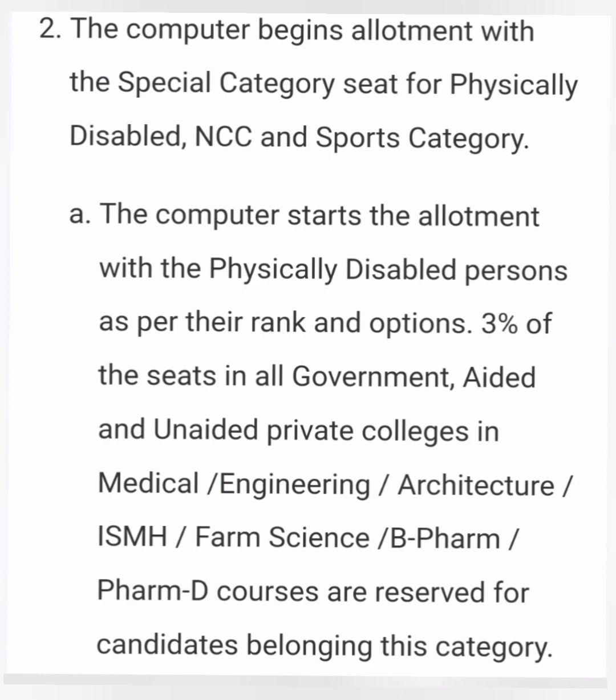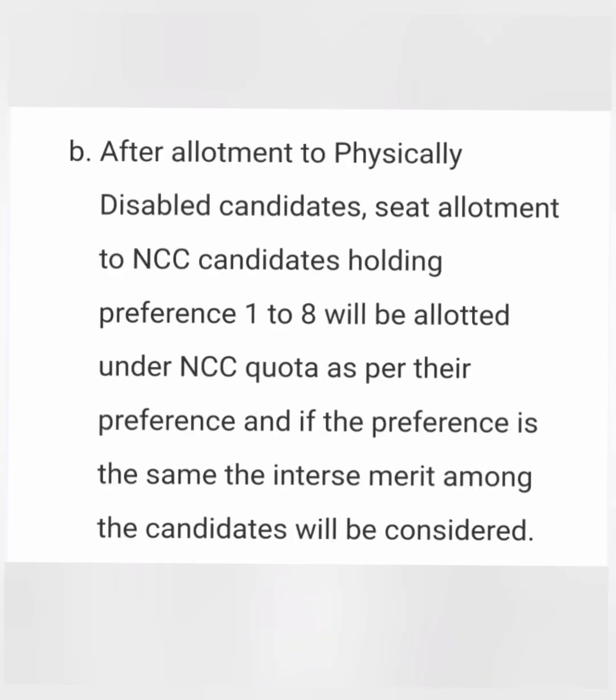Within the special category, the first allocation is Point A — physically disabled candidates. They will be allotted seats before anyone else. Three percent of all seats in government, aided, unaided, and private institutions — across medical, engineering, architecture, and farm sciences — are reserved only for physically disabled students. The computer will allot to disabled students first.